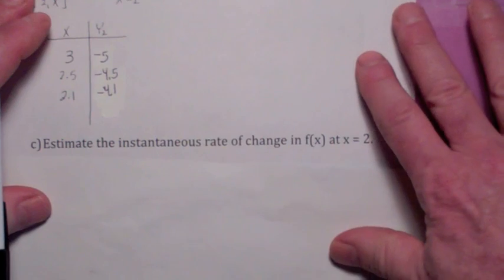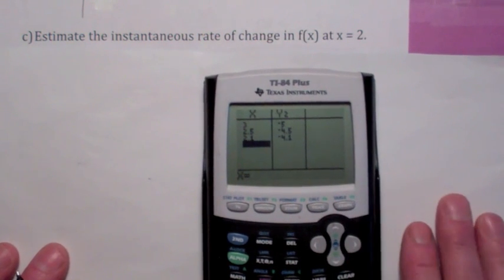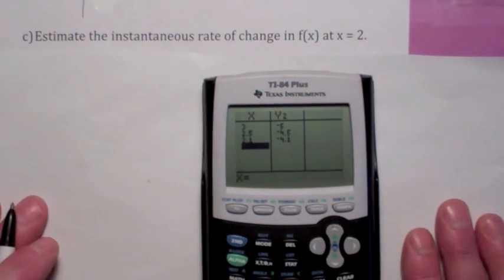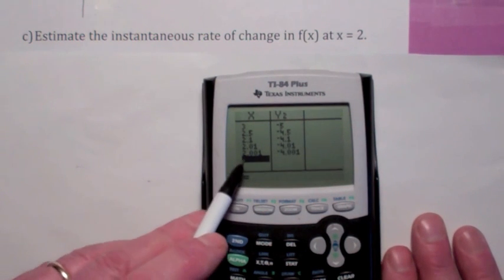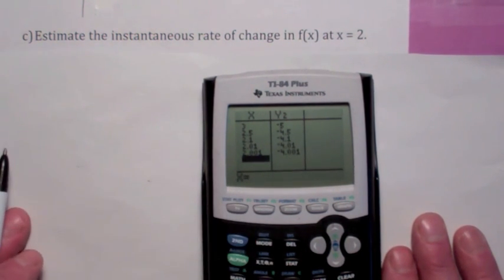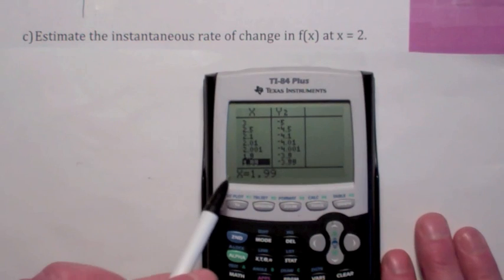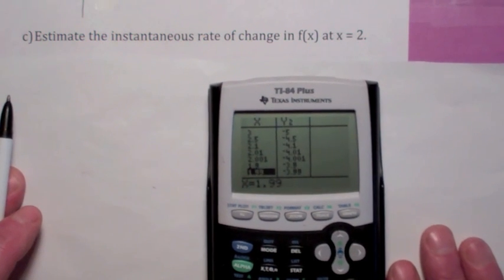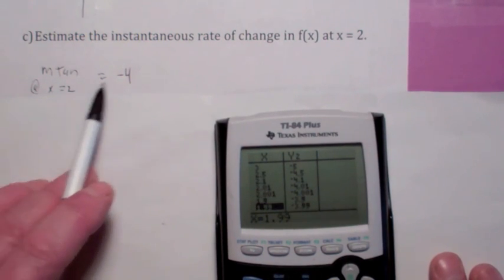We can also use this to find the slope of the tangent line at x equals 2. We look at what the secant line slope gets close to as the second point approaches x equals 2. Entering 2.01 and 2.001 gives values close to negative 4. Checking the other side, 1.9 and 1.99 also give values close to negative 4 — like negative 3.99. So the slope of the tangent line at x equals 2 appears to be negative 4.